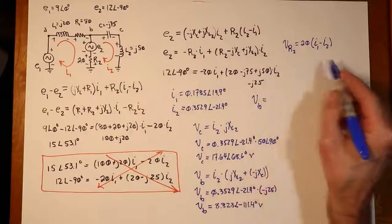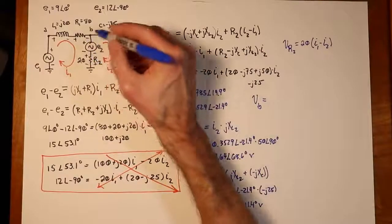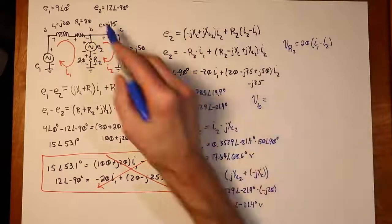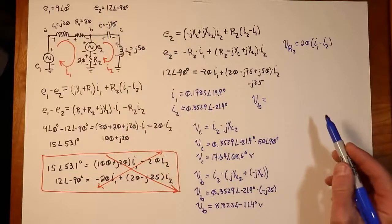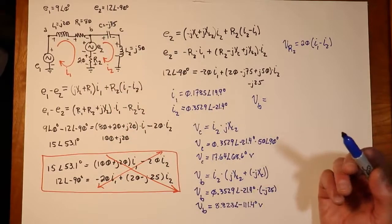Plug those numbers in, grind this out, we'll get the drop on this. Then we can just add the value of E2 to it, which is the 12 at minus 90. Another option is, and this is perhaps, out of all of them, the longest way home, is to kind of go this way.